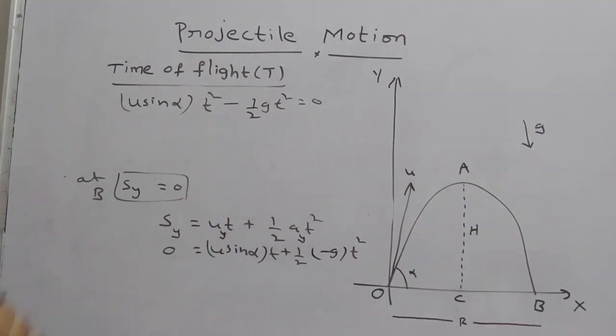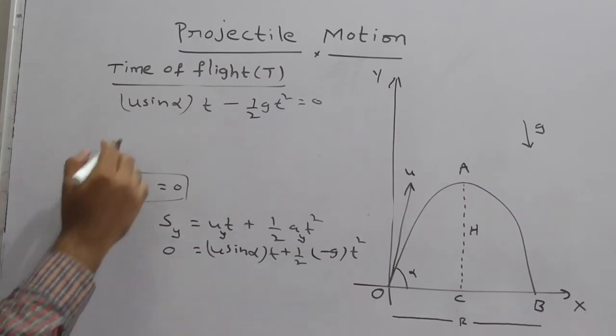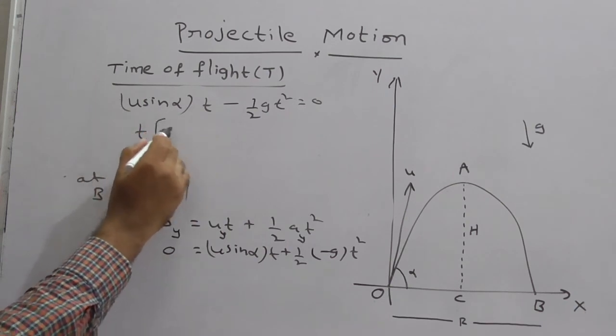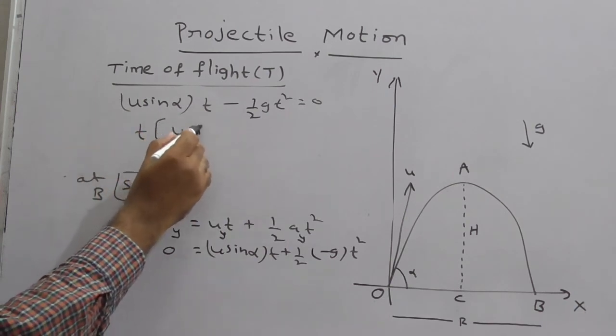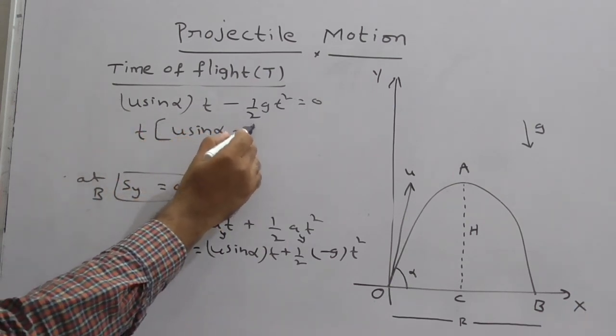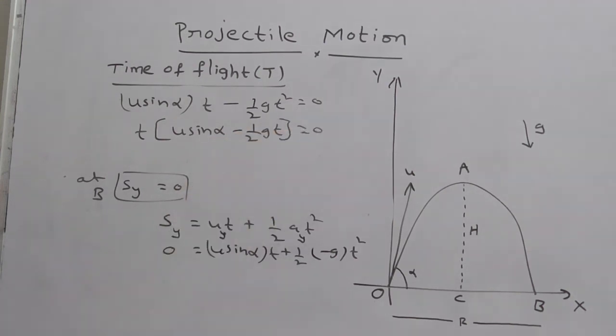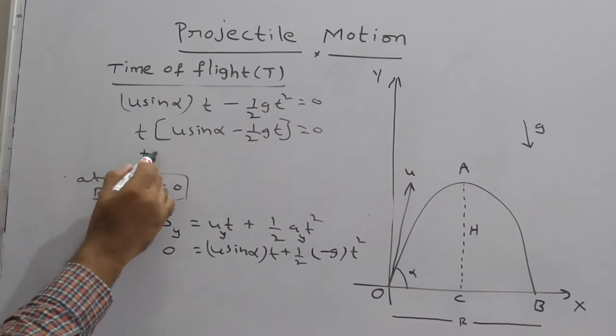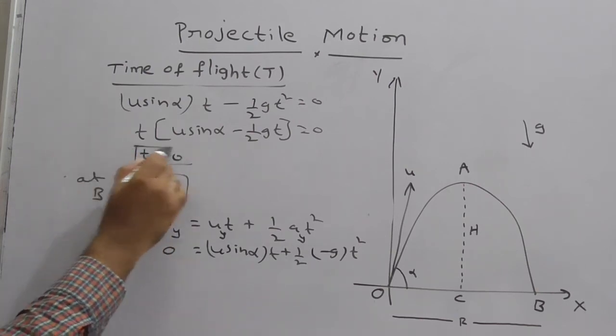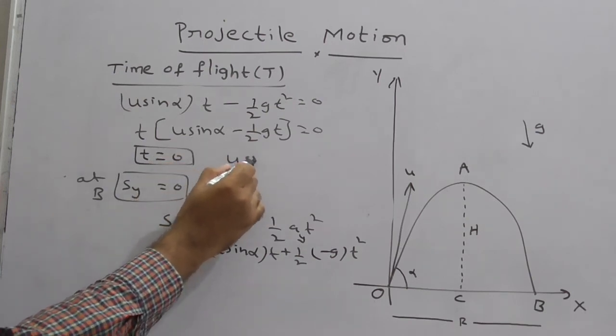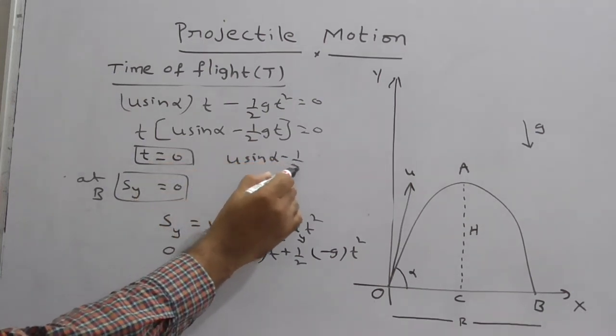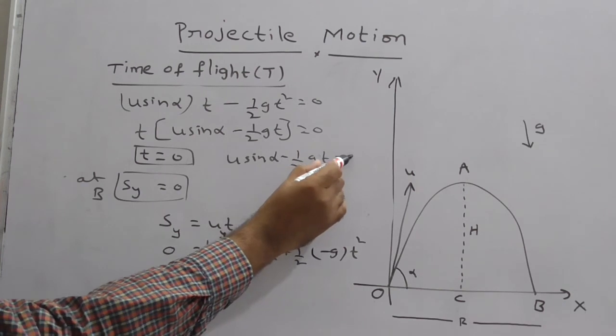U sin alpha t plus minus half g t square. Take t common. So here you get t times (u sin alpha minus half g t) is equal to 0. So now, here t is equal to 0, one concept. The another one is u sin alpha minus half g t is equal to 0.